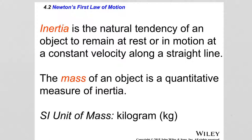Another example of inertia is a person in the passenger seat of a car taking a turn at high speed. As the car turns, your body leans toward the door. That's because your body has inertia — according to the first law, it doesn't want to change from moving in a straight line. As the car starts to turn, your body continues moving on a straight line and leans into the door. Only because the door is there do you take the turn along with the car.